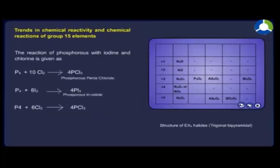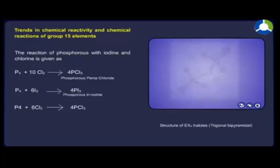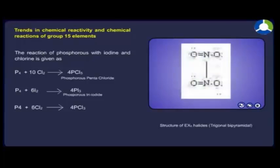The reaction of phosphorus with iodine and chlorine is given as: P₄ reacts with 10Cl₂ to give 4PCl₅. P₄ reacts with 6I₂ to give 4PI₃. P₄ reacts with 6Cl₂ to give 4PCl₃.